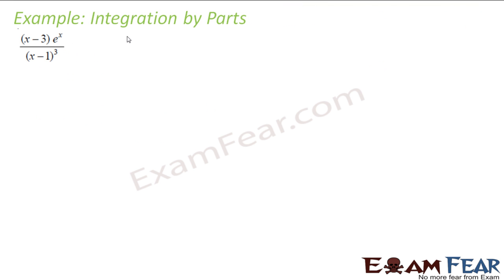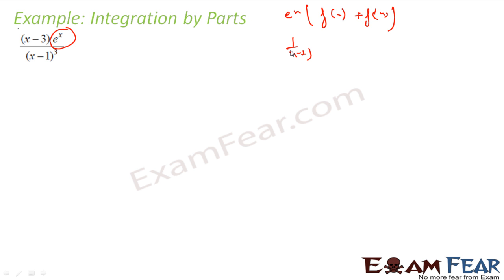Let's take one more example. Here also we see the e^x form, so let's try to get something of the form e^x [f(x) + f'(x)] dx. One thing I know is 1/(x−1)³ is there, and if I can get 1/(x−1)², both are related. If I take 1/(x−1)² as f(x), then its derivative f'(x) will relate to 1/(x−1)³.